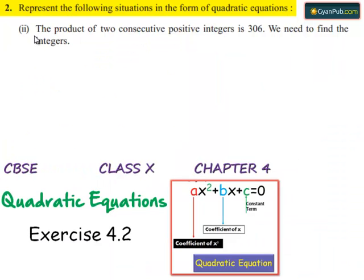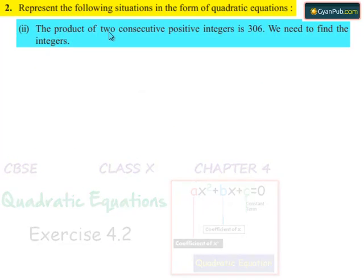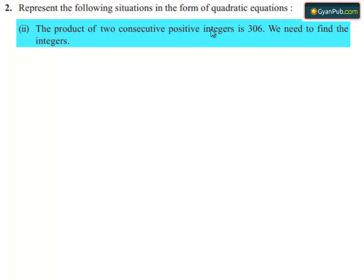Moving on to the second bit, the product of 2 consecutive positive integers is 306. We need to find the integers. So let us see the solution.